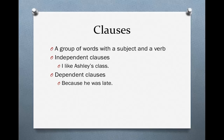First of all, what is a clause? A clause is a group of words with a subject and a verb. There are two kinds of clauses: independent clauses and dependent clauses. Independent clauses can stand on their own — they do not need to be attached to another clause. For instance, 'I like Ashley's class.' Subject: I. Verb: like. That's a complete sentence. Independent clauses are also known as sentences.